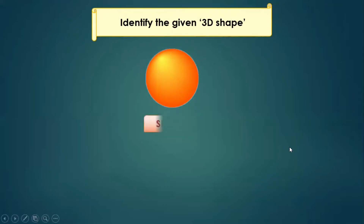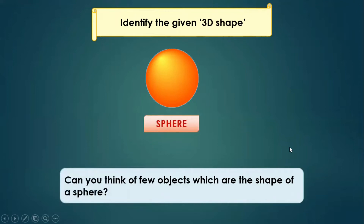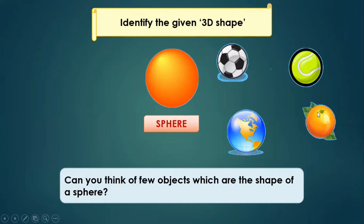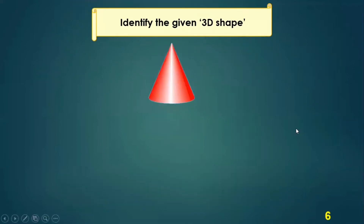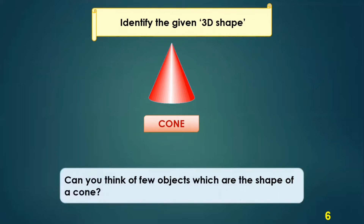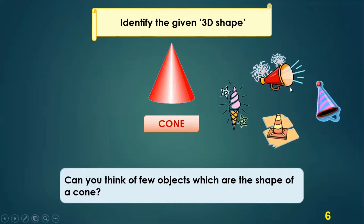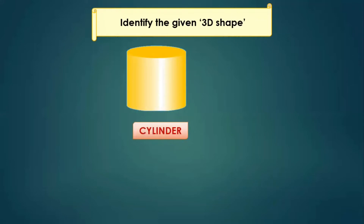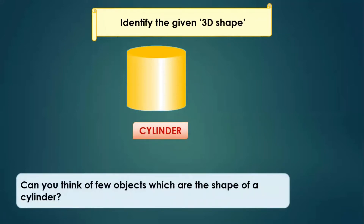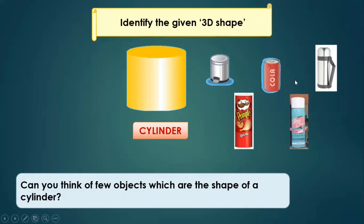Now guess this — yes, it's a sphere. Look at the spherical objects around: a football, your globe, your melon, your tomato, the oranges — they are all spherical. Identify this one — yes, it is a cone. It is the summer and we all like to eat some ice cream which comes in a cone. You can see a loudspeaker and a conical cap which you like to wear on birthdays, and the stamping pad. Now identify this — yes, it is a cylinder. A few objects which are cylindrical: your bottle, your cola can — all of these are cylindrical in shape.